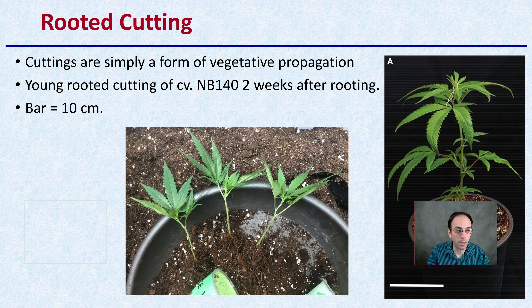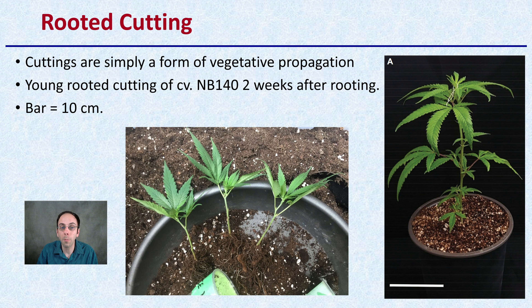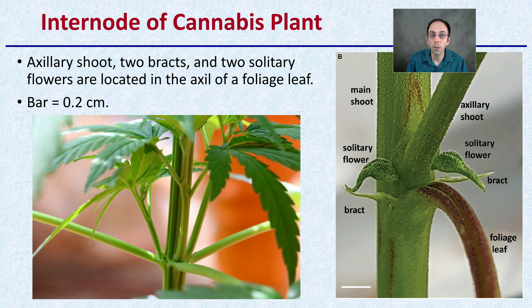First, I want to talk about rooted cuttings. Rooted cuttings are a simple form of vegetative propagation. We see the example here — exhibit A — with the rooted cutting about two weeks after rooting, and this bar represents 10 centimeters for size orientation. These are what a lot of growers refer to as clones — genetic copies of the mother or stock plant. They carry the same terpene profiles and cannabinoids as the mother plant, and it's a great way to ensure genetic consistency.